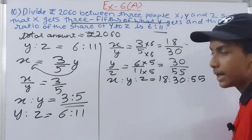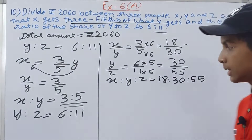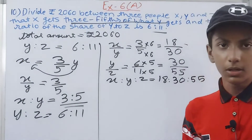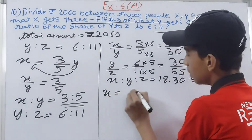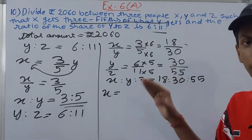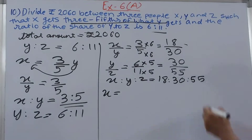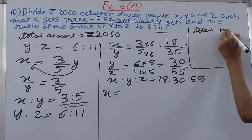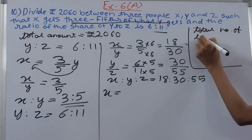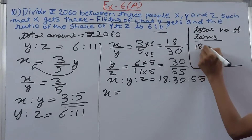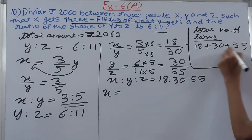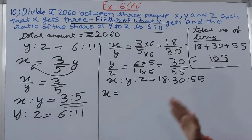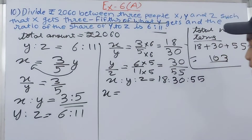Now we can write the combined ratio: X is to Y is to Z equals 18 is to 30 is to 55. The total sum of terms is 18 plus 30 plus 55, which equals 103.